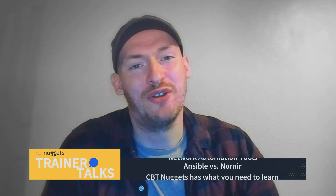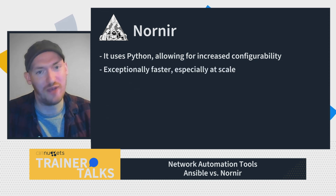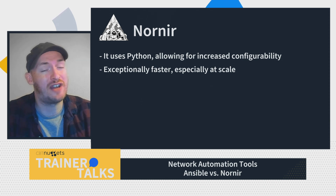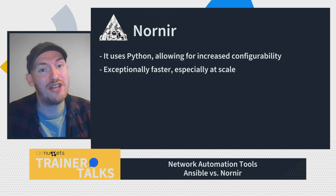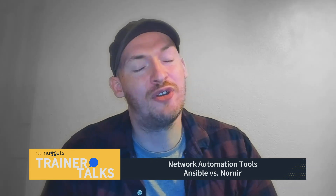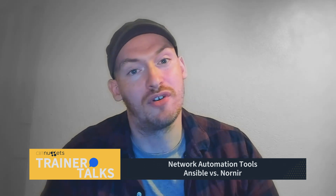The second reason to learn Nornir is that it has much better performance than Ansible — it's just way faster. If you're automating maybe 10 devices, the speed differential is pretty negligible. But as you scale up, the effect becomes exponential. At around 500 devices, a Nornir solution could cut your execution time by half, and scaling up to 10,000 devices, Nornir's speed advantage becomes more and more apparent.